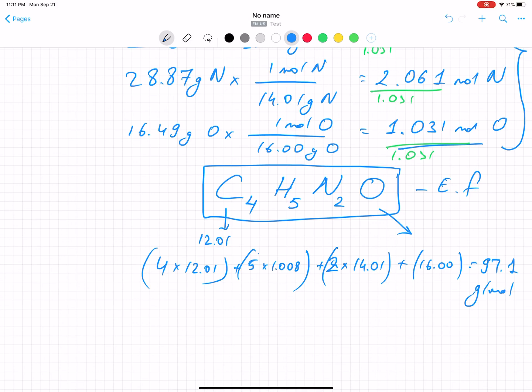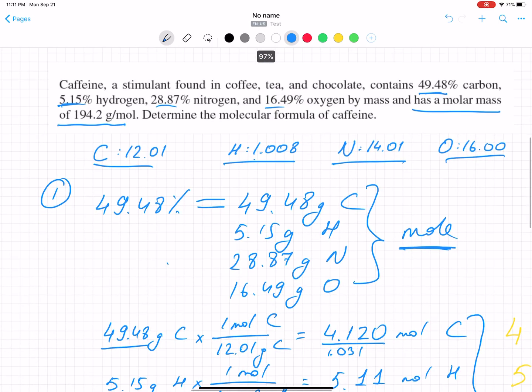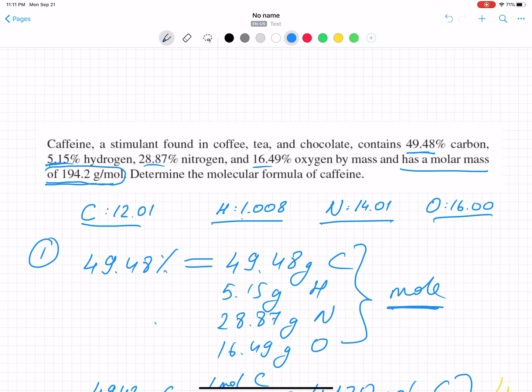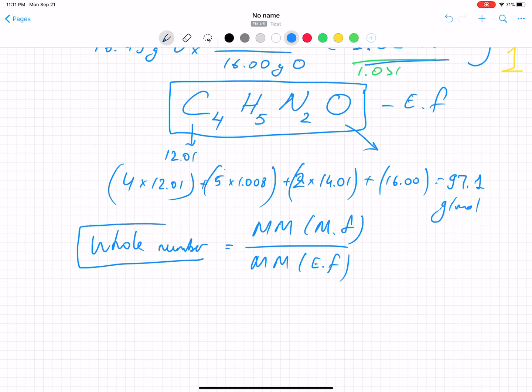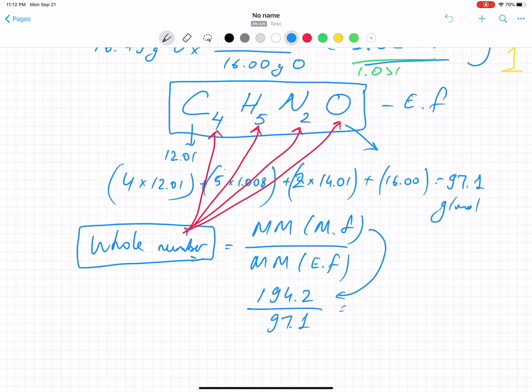We got 97.1. Now, let's see. Molar mass of 194.2. Look very carefully at the ratio. We need a number, the whole number. And we will divide. So molar mass of molecular formula will be divided by molar mass of empirical formula. And whatever you will get, you will multiply by all indexes. So this will be multiplied to 4, to 5, to 2, and to 1. So let's find that whole number. I have 194.2, that's a molar mass of molecular formula over 97.1. You will use the calculator, or you can do that yourself. That number is 2.